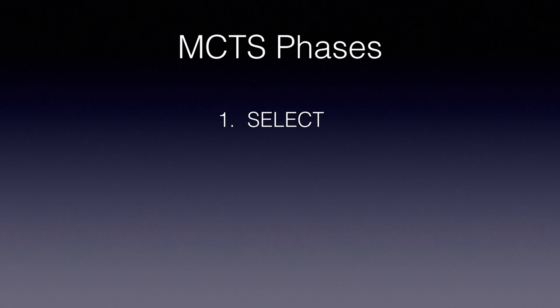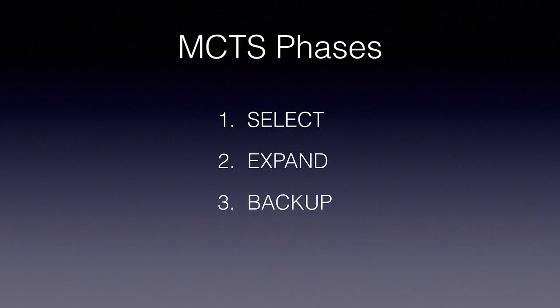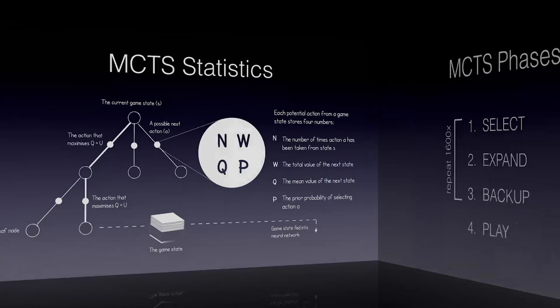The Monte Carlo Tree Search algorithm consists of four distinct phases. First, select a path — a sequence of moves from the root node to the leaf node that seems promising. Step 2, expand the search tree by exploring one more move. Step 3, back up and update all edges traversed with the statistics gained. Step 4, play — after repeating the above 1600 times, choose the best move.